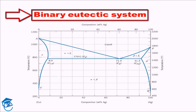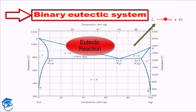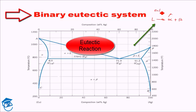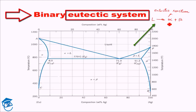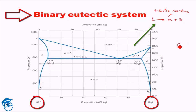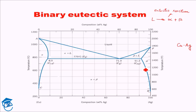A eutectic system is a special type of system in which the following reaction takes place: one liquid gives rise to two solids simultaneously — alpha and beta. This is known as the eutectic reaction. A phase diagram which has a eutectic reaction can be said to be a eutectic system. The example we will examine here is the copper-silver system, which exhibits a eutectic reaction.